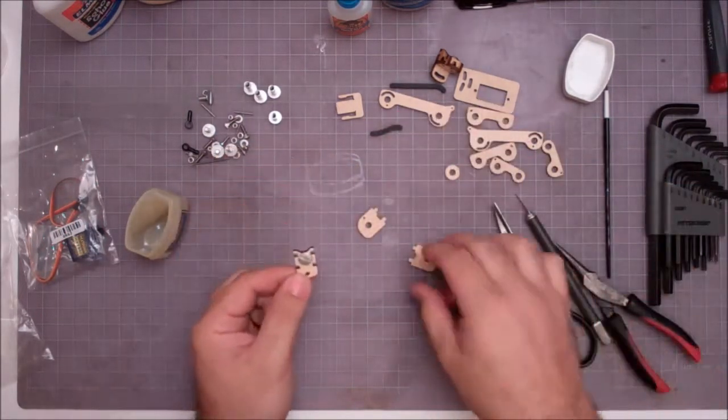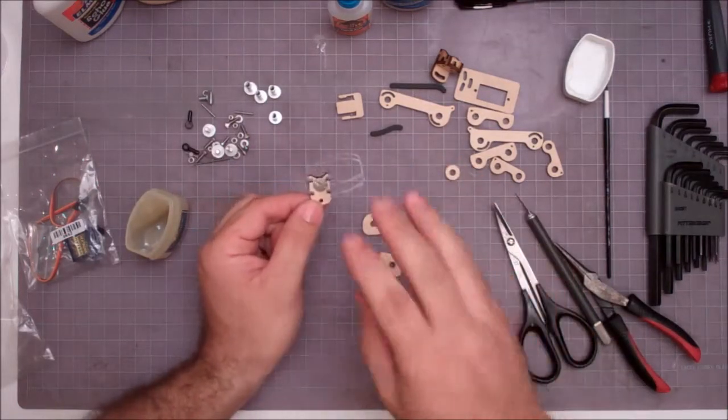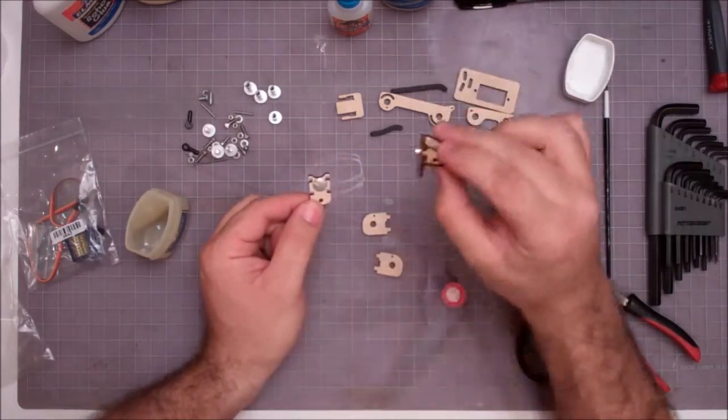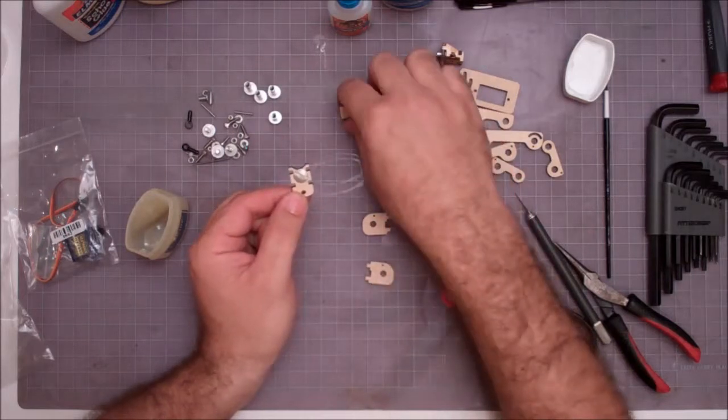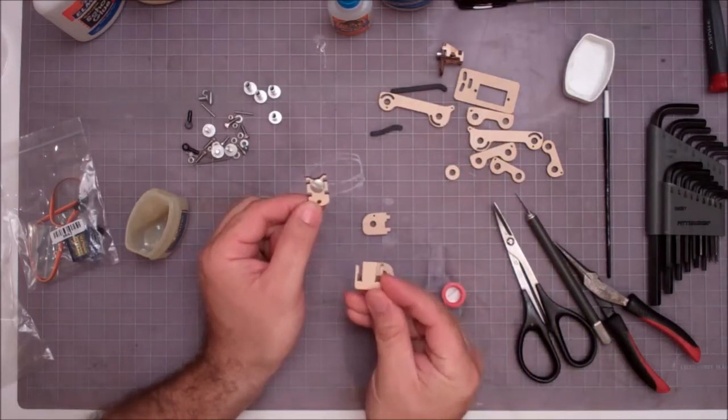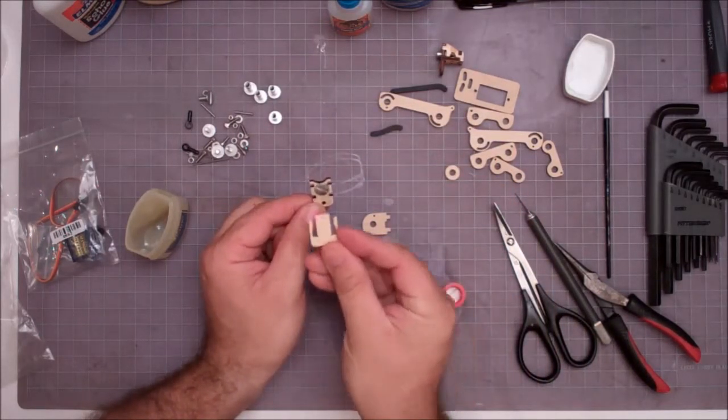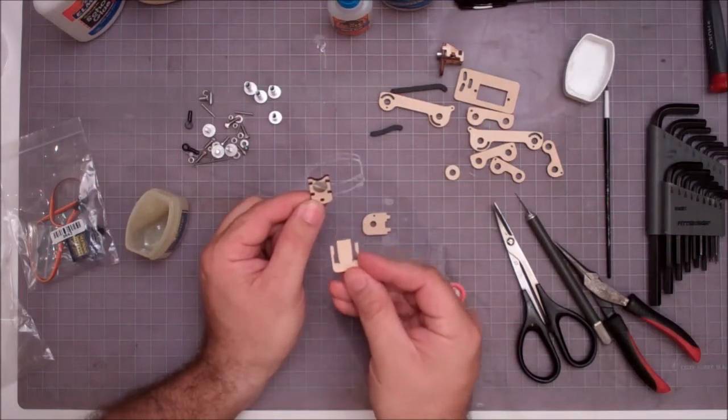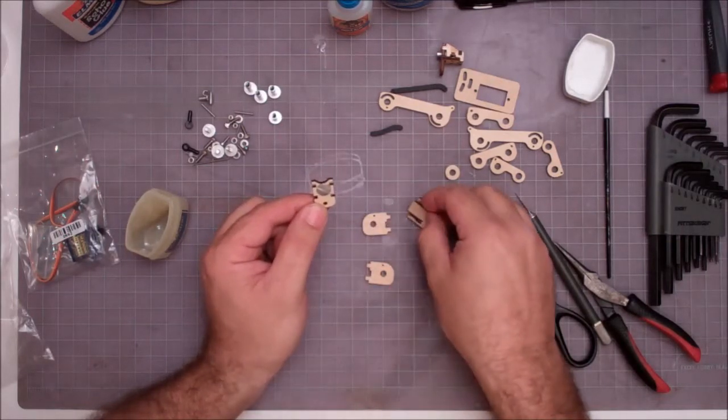So this part doesn't quite assemble as nicely as this part does, it kind of has floating parts. So what we've done is we've made this little fixture here, and this little fixture helps hold the parts in place while you glue it and assemble it.